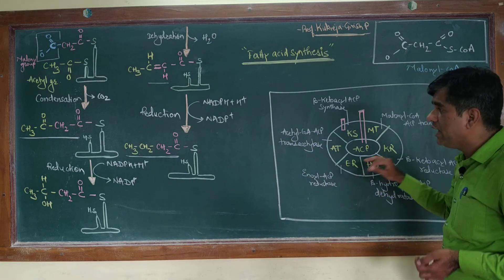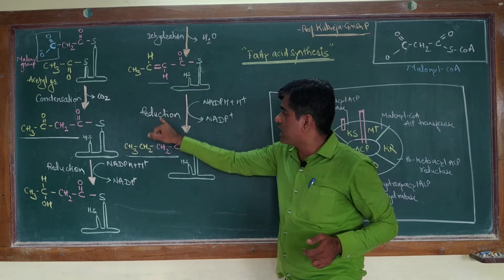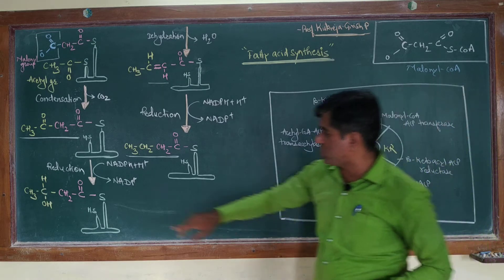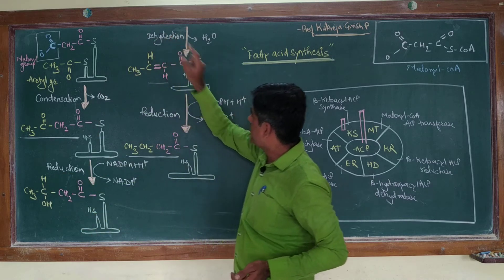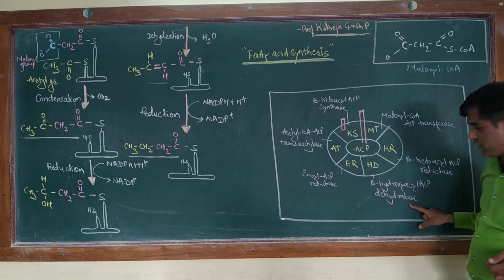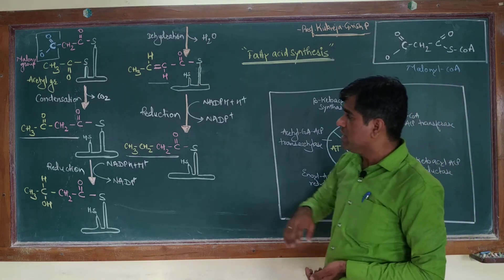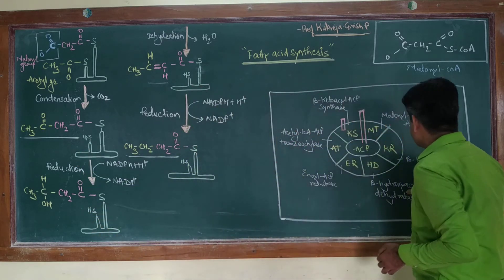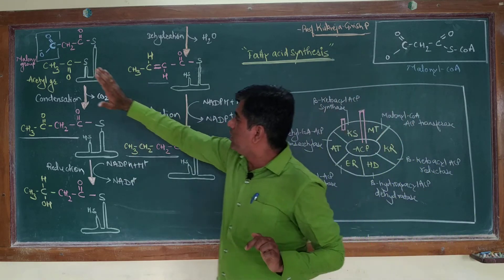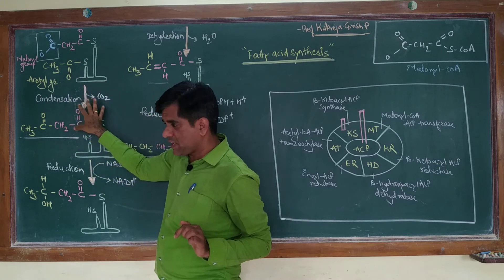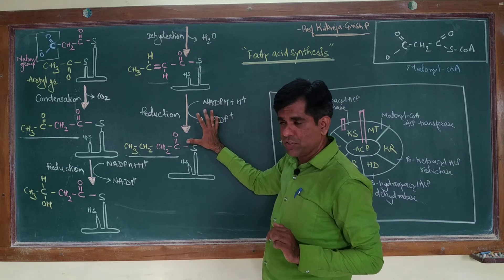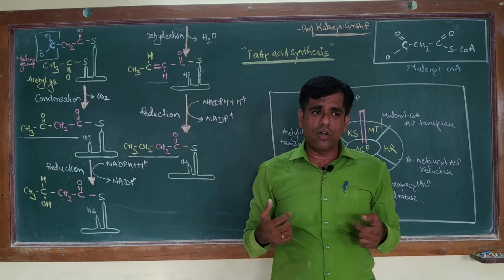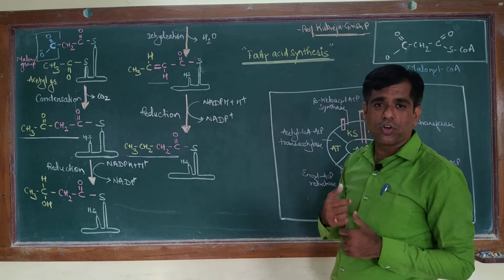Enoyl-ACP reductase is involved in reduction of the enoyl group to form the saturated fatty acid. Beta-hydroxyacyl ACP dehydratase is involved in the dehydration step. Beta-ketoacyl ACP reductase reduces the ketoacyl group to form the hydroxyl group. The cycle — condensation, reduction, dehydration, and again reduction — operates repeatedly. Once the chain length reaches around 16 carbon atoms, the product leaves the active site of the fatty acid synthase.